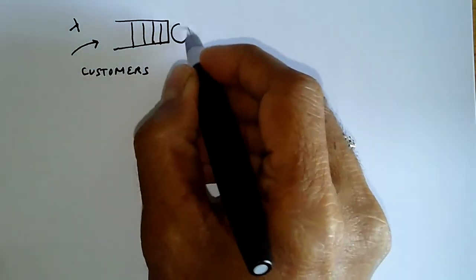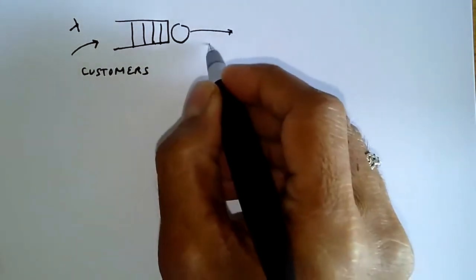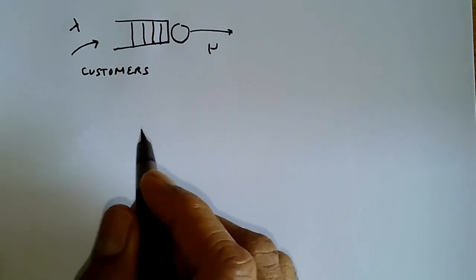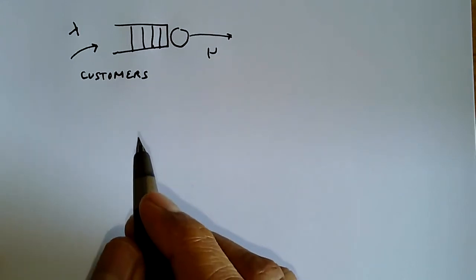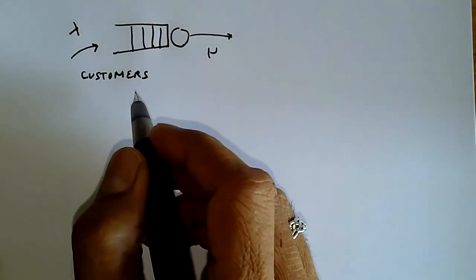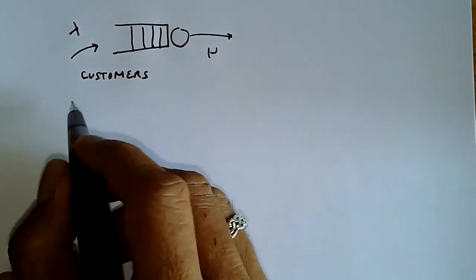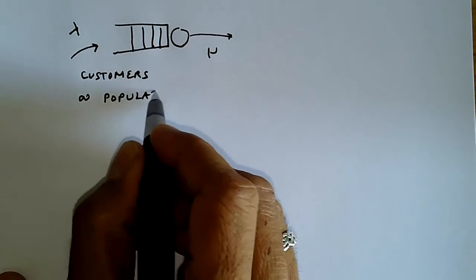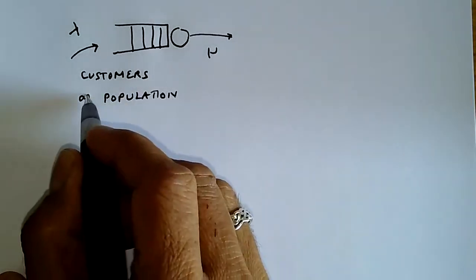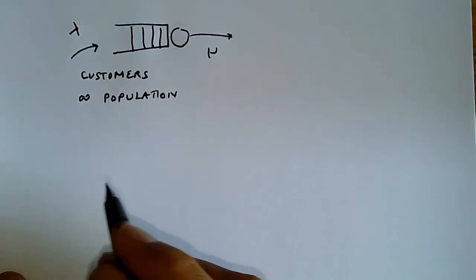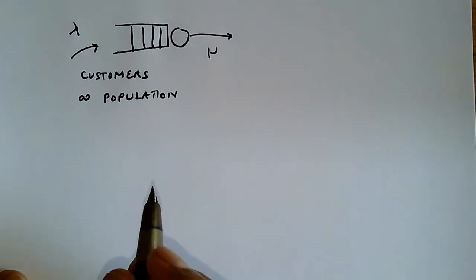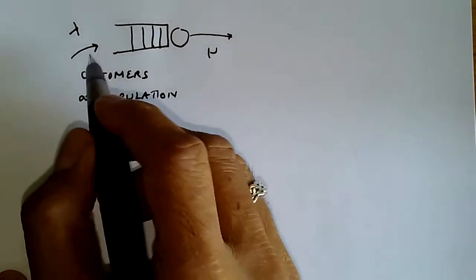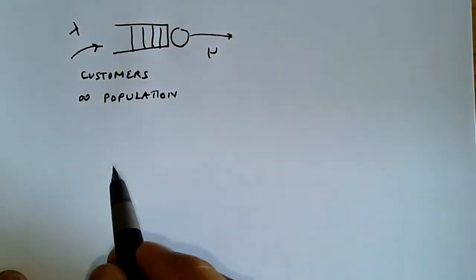Let's call them customers to keep terminology consistent. The customers receive service from a server and then depart at some rate mu. In our discussion so far, we've assumed that customers are coming from an infinite population, or a system where we have such a large number of potential customers that the arrival rate does not depend on the number of people in the queue.